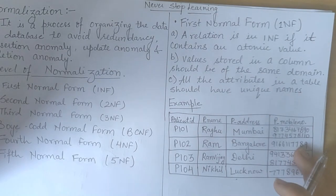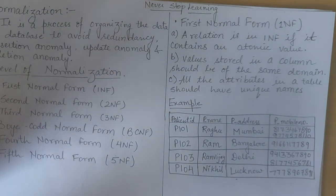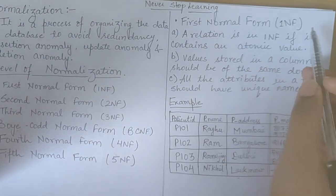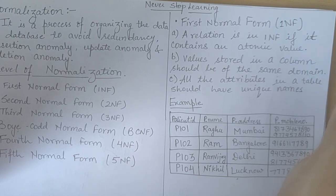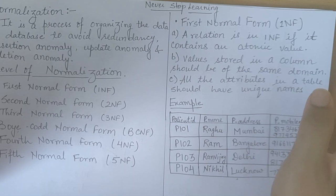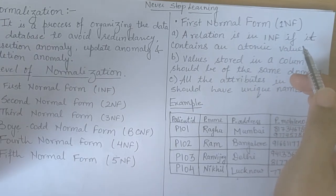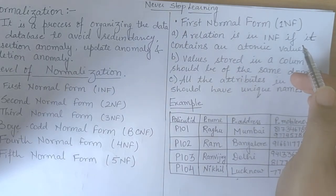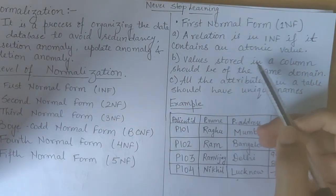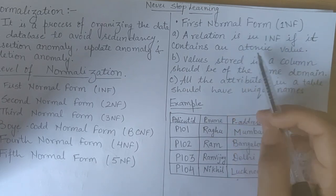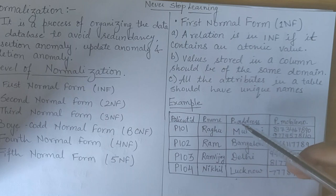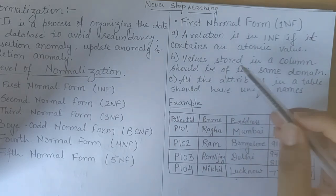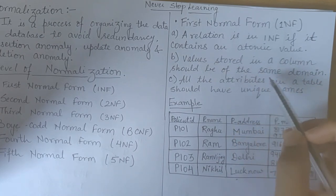For First Normal Form, there are a few rules. If a table follows these rules, we say the table is in First Normal Form or 1NF. One important point: if a table is not in First Normal Form, it will be considered a bad database design. The minimum requirement for any table is that it should be in at least 1NF. The first rule is: a relation is in 1NF if it contains atomic values — meaning for each row or tuple, only a unique and atomic value is allowed.